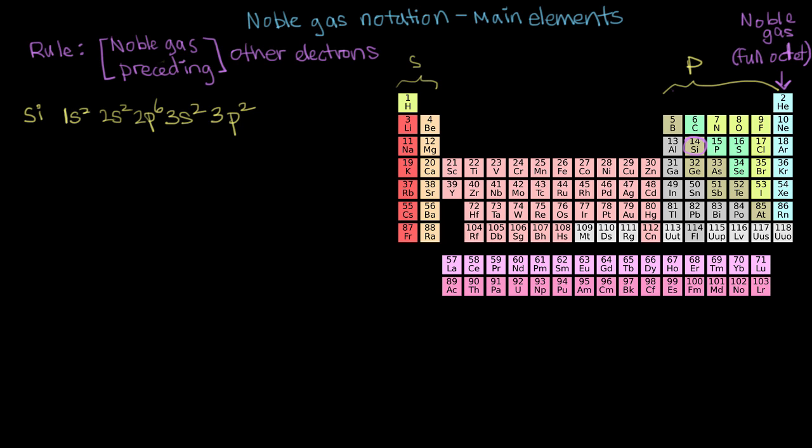Now we can write it out using noble gas notation and compare. So the noble gas immediately preceding silicon, if we go up a row and then move over, we see that it's neon. So we write neon in brackets.